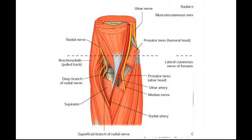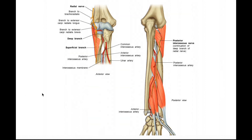This superficial branch is 100% sensory — it does not innervate a single muscle. And it really isn't going to do much until it gets to the hand. Let's follow the course of the superficial radial nerve, keeping in mind that it's going to be mostly underneath the brachioradialis muscle.